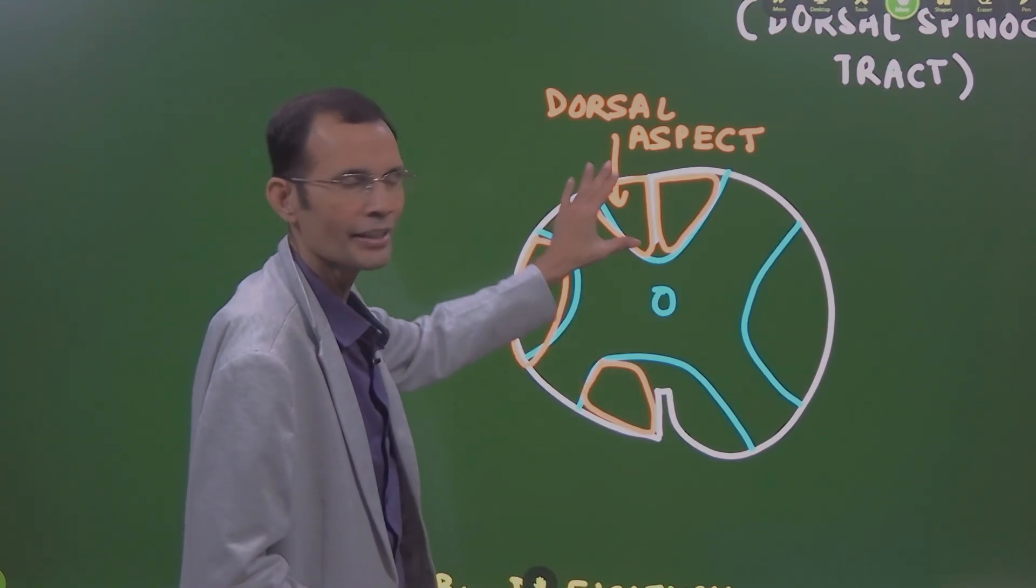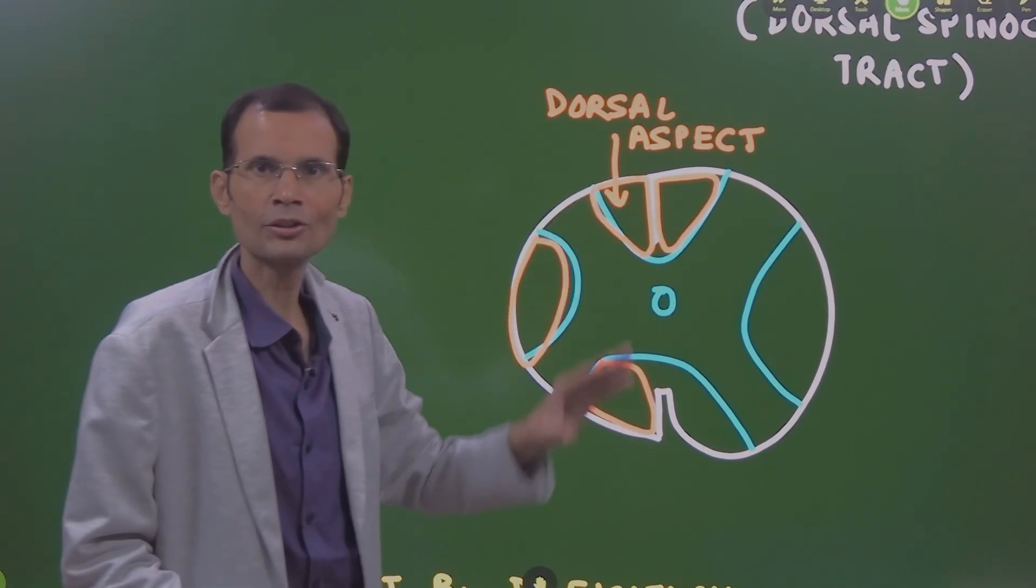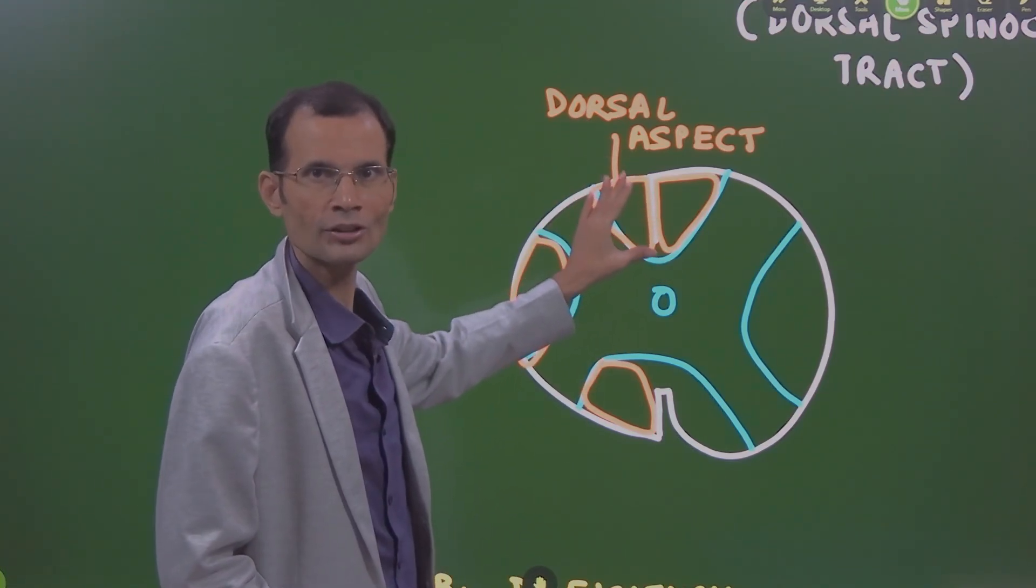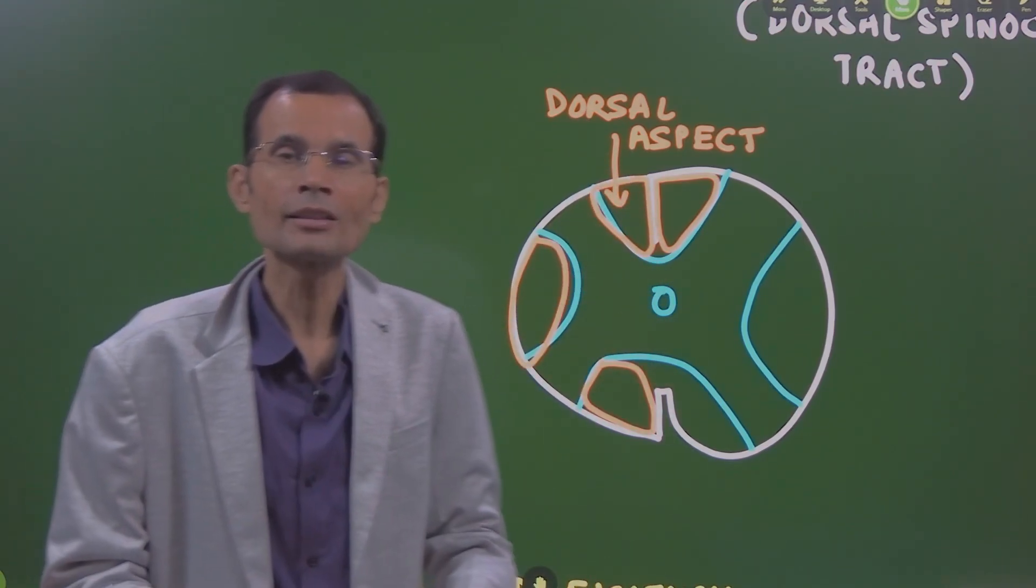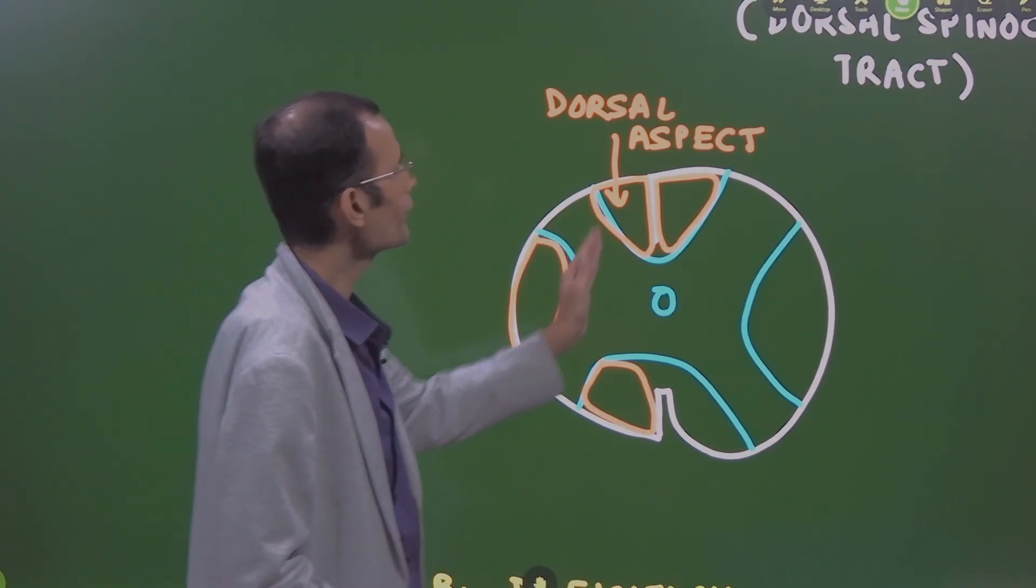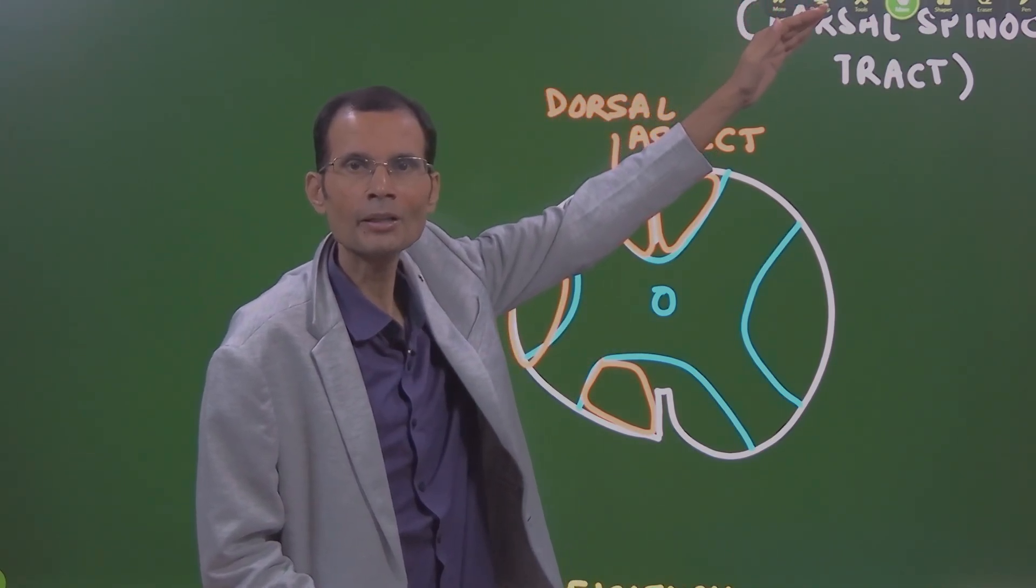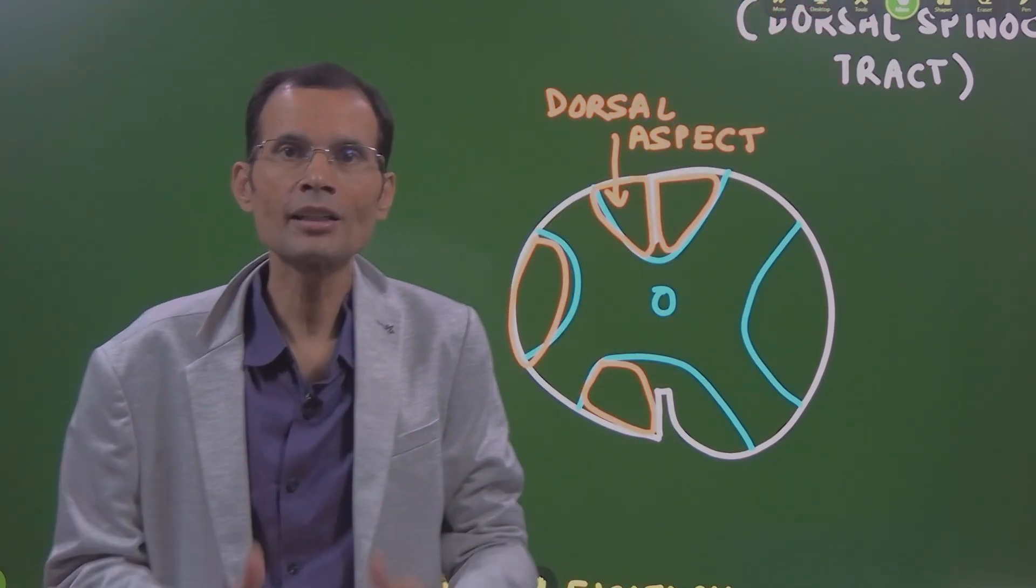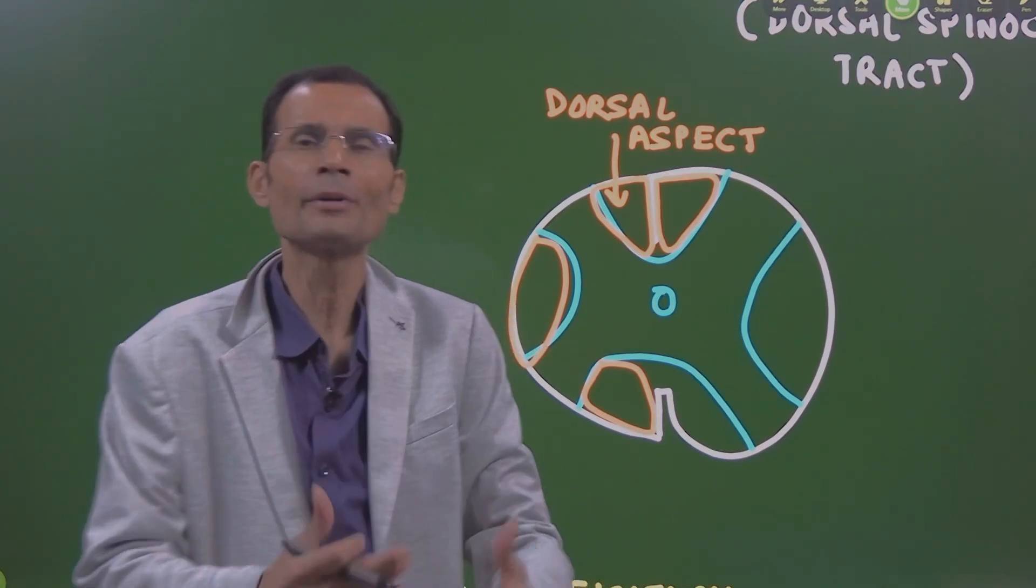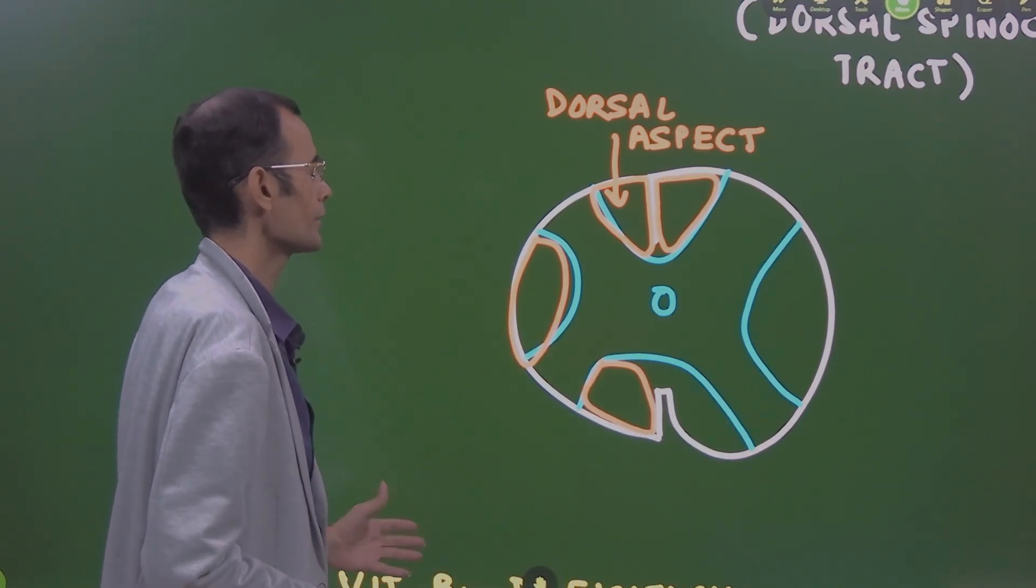So if this part is degenerated, dorsal as well as lateral, but we are again focusing on the dorsal aspect. If this part is degenerated, the neurons are degenerated here, that means the input from the muscle which is coming to the spinal cord, but it will not ascend upward and will not reach the cortex or cerebellum. So it will result in the loss of coordination. Cerebellum will not be able to perform any coordination because it is not receiving any inputs from the muscle, contracting muscle.